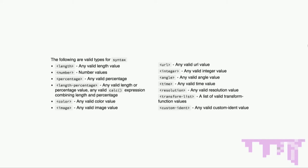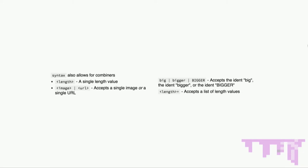There are a bunch of different valid options for syntax: lengths, numbers, percentages, length-percentages like calc, colors, images, and URLs. Integers, angles, times, resolutions, transform lists, and custom idents — so if you want an ident that says awesome, you can create a custom ident that is awesome. Syntax allows combiners: a single item like length, optionals like image or URL, all three ORed with the pipe, and you can accept lists by adding a plus after any of your syntaxes.